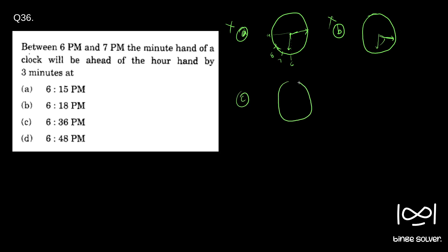For Option C, at 6:36 — let this be 6 and this be 7. At 6:36, the hour hand will be almost halfway, and the minute hand will have crossed 6:30. So at 6:36, if you see, the difference is almost comparable to three minutes. So this could be the case — Option C is a possibility.